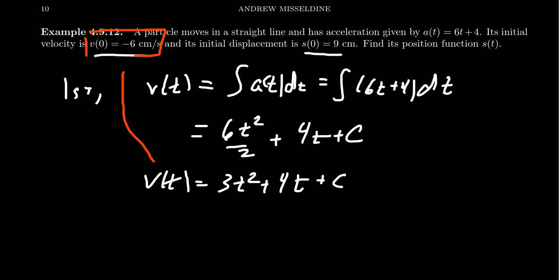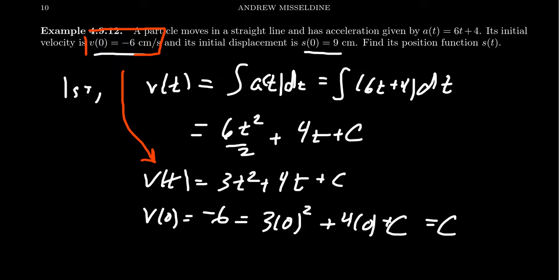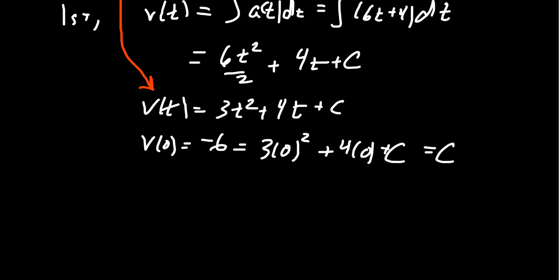Like we did on the last example, because we know the initial velocity, we can plug that in for the velocity right here and we can solve for this constant. v(0) = -6. Well then we plug in 0 for all the t values, so we get 3(0)² + 4(0). It's always generous when they give you 0 there, because the right-hand side will just simplify to be C because of all the zeros there. So C is -6, and therefore our velocity function v(t) will equal 3t² + 4t - 6.